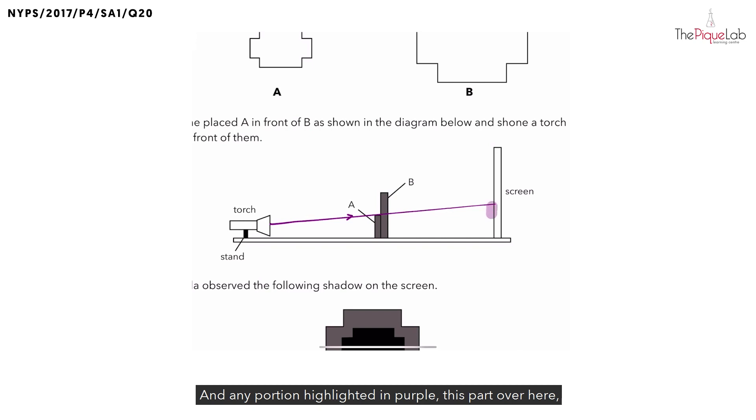Any portion highlighted in purple, this part over here, this is where light from the light source is blocked by A. So that is where we form the shadow of A.